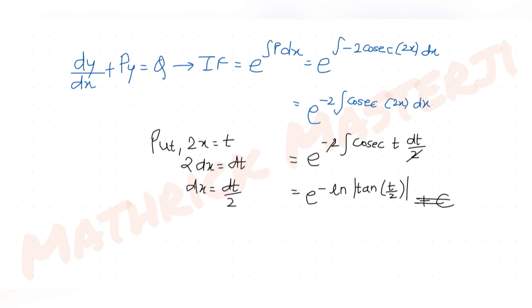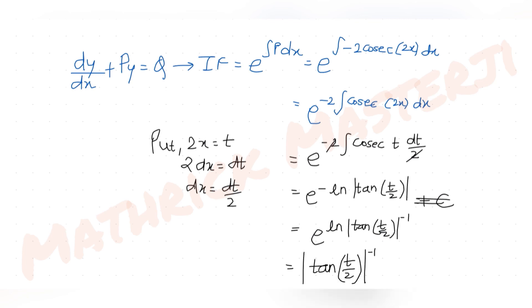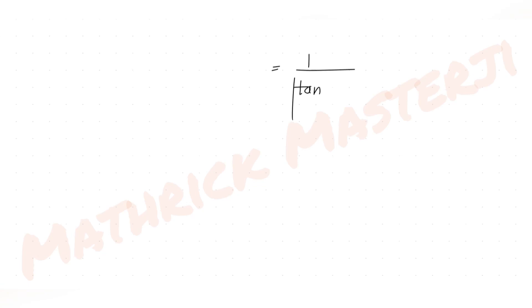Using e^(−ln|f(x)|) = 1/|f(x)|, the IF simplifies to 1/|tan(t/2)|. Re-substituting t = 2x gives t/2 = x, so the integrating factor is 1/|tan x|.